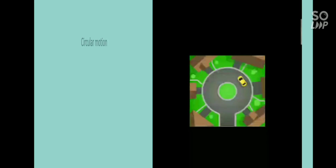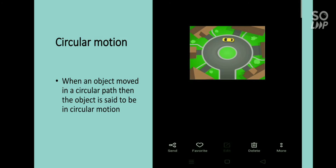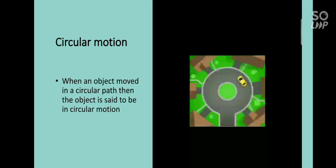Next is circular motion. When an object moves in a circular path, it is said to be in circular motion. Look at this video — the car moves in a circular path, so it possesses circular motion. Other examples include swirling a stone tied to a string, or a cycle wheel moving in a circular path. Any object moving in a circular path is said to be in circular motion.